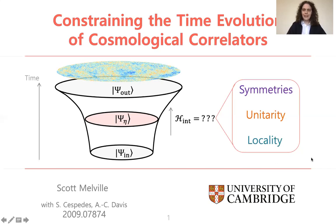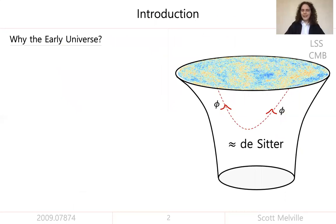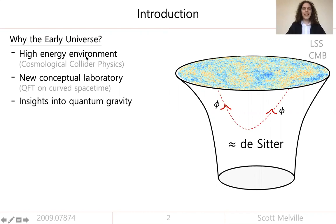Let me start by saying how I view the early universe. It's a period of approximately de Sitter expansion during which correlated fluctuations of some scalar field phi are produced. This is a very high energy environment compared to terrestrial colliders, so that's a place where we might learn about very fundamental physics. It's also a new conceptual arena where we can test how well we understand quantum field theory on curved spacetime, and you might hope to learn something interesting about quantum gravity.